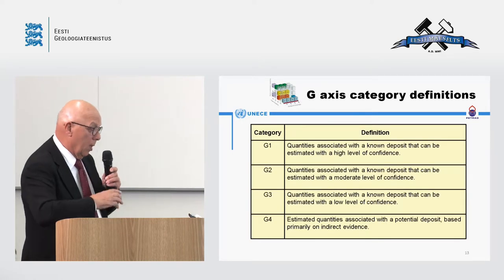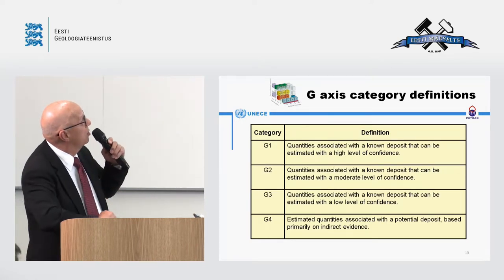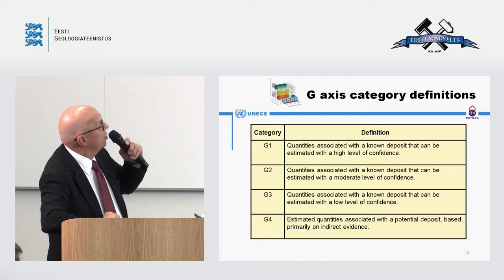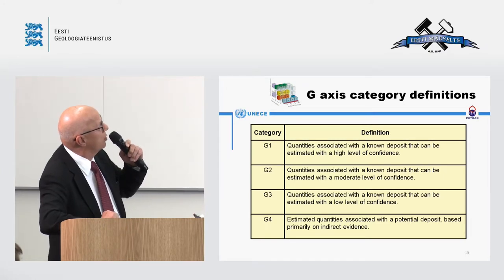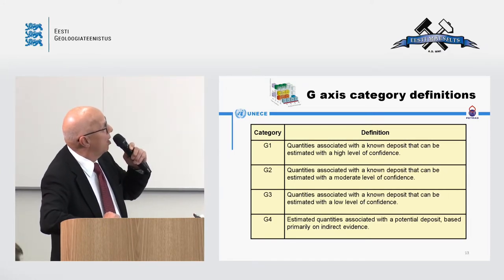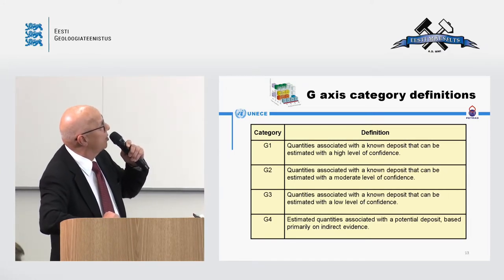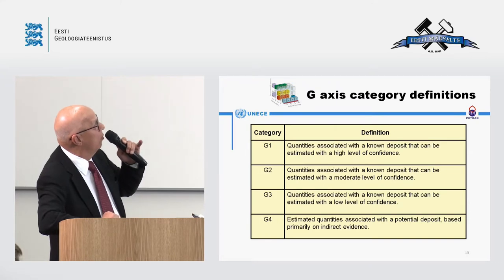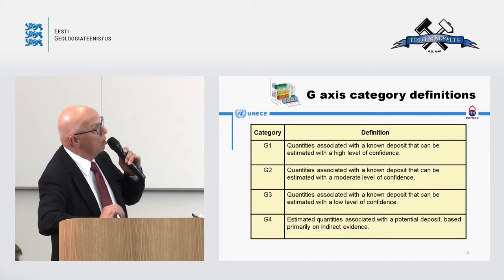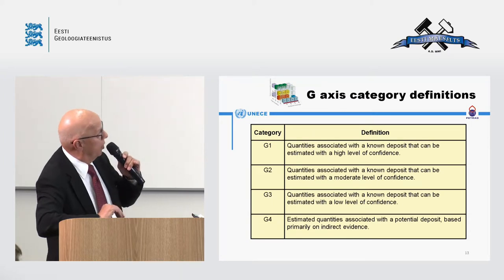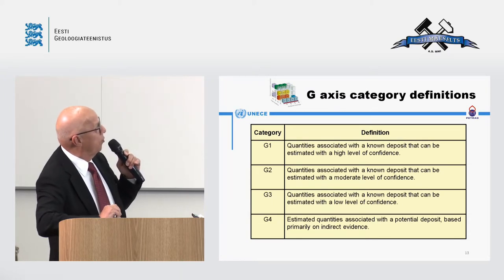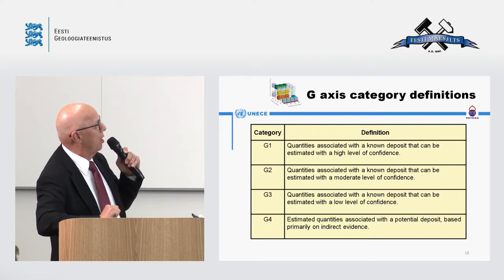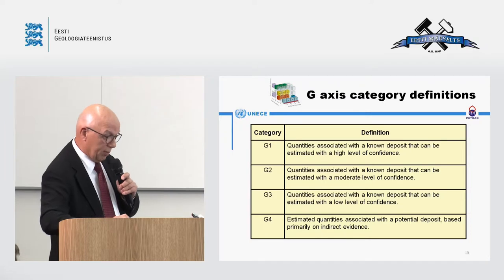The G-axis definitions: G1 refers to quantities associated with a known deposit that can be estimated with a high level of confidence. G2 is with a moderate level of confidence. G3 is with a low level of confidence. G4 refers to estimated quantities associated with a potential deposit based primarily on indirect evidence.